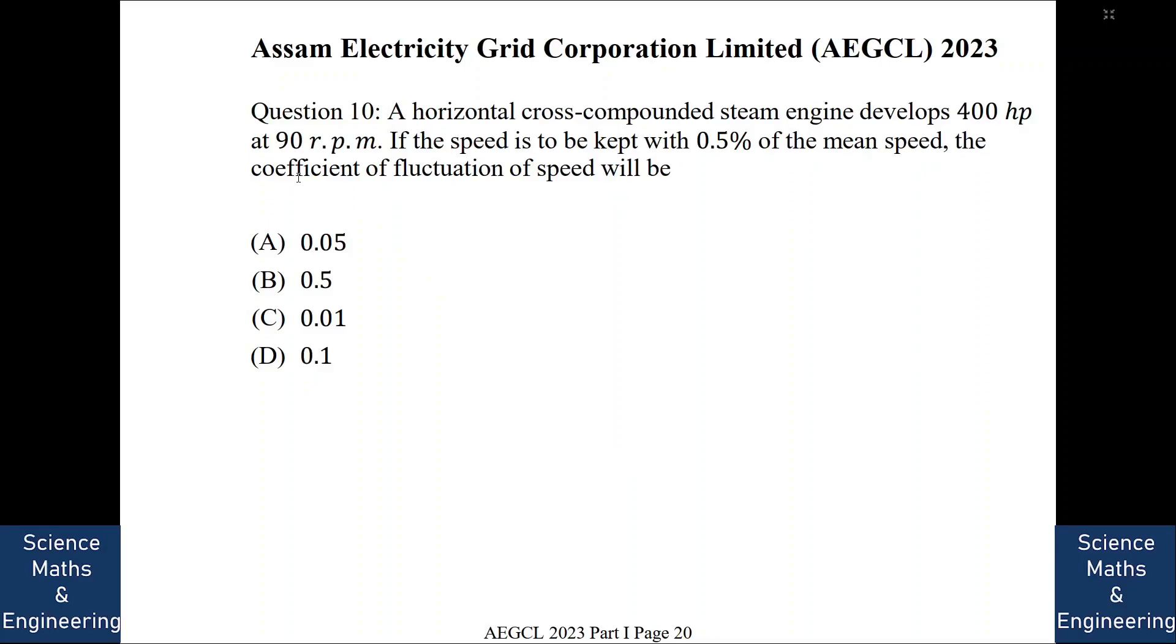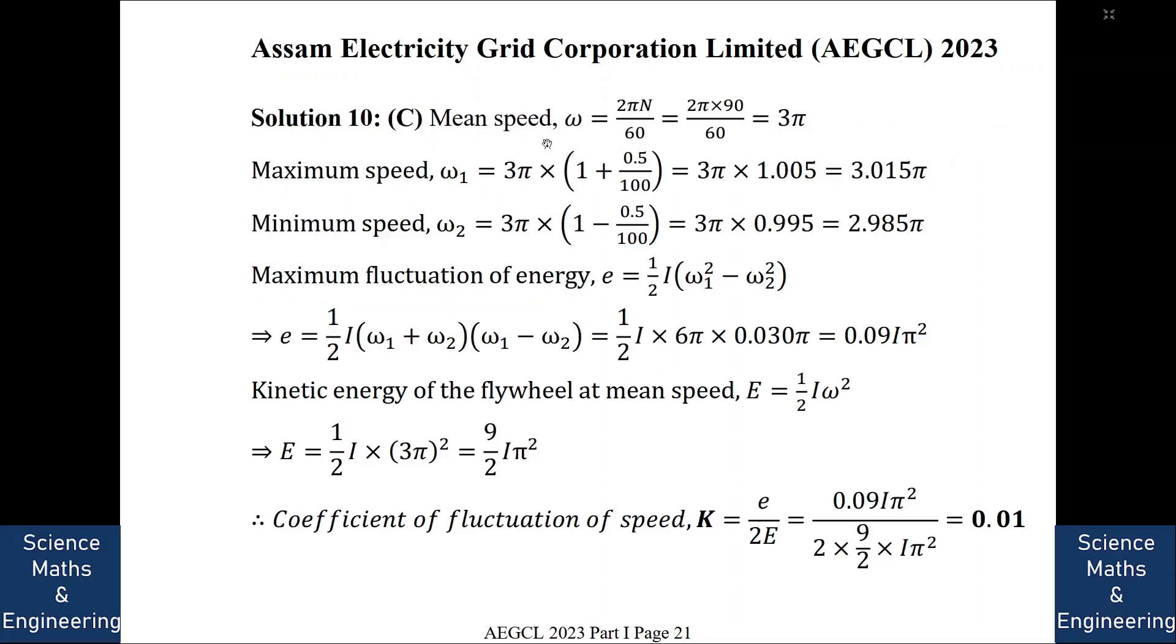A horizontal cross compound steam engine develops 400 horsepower at 90 RPM. If the speed is to be kept within 0.5% of the mean speed, the coefficient of fluctuation of speed will be. So this is a problem of flywheel. So the answer is C. Mean speed is what? RPM is given as 90. So omega, mean speed omega is 2 pi n by 60. So it is 3 pi.